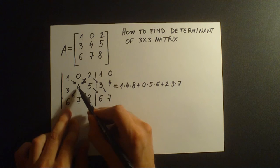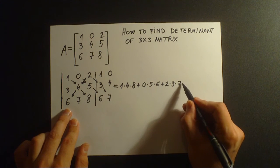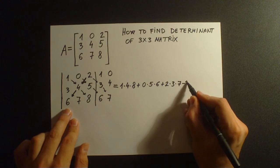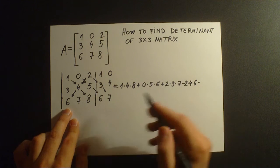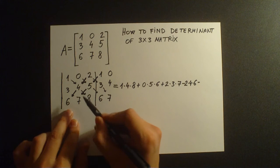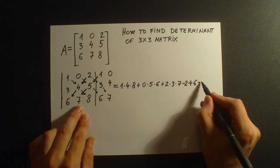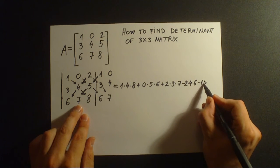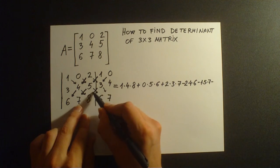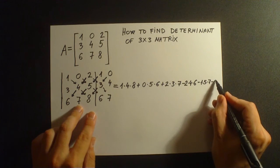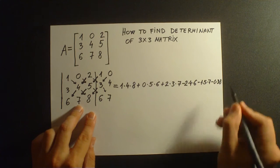So we're going minus 2 times 4 times 6, minus the elements of the second diagonal in the opposite direction, which are 1, 5, 7. And then the elements of the third diagonal: minus 0 times 3 times 8.